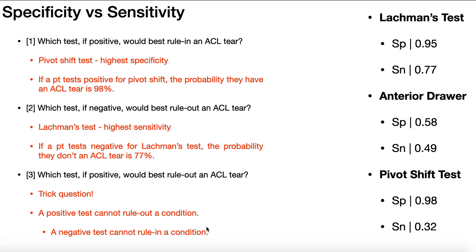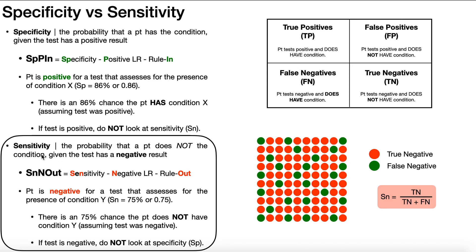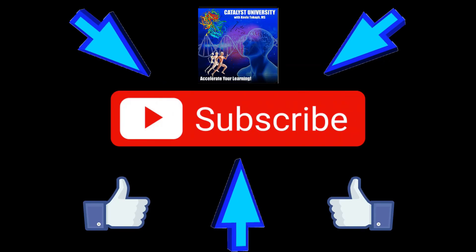In either case — positive or negative — you look at a different value. A positive test means you look at the specificity value; a negative result means you look at the sensitivity value. Hopefully this video gave you a decent understanding of specificity and sensitivity. Please make sure to like this video and subscribe to my channel for future videos and notifications. Thank you.